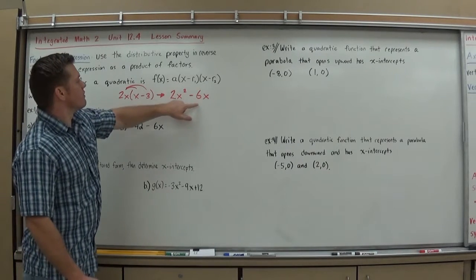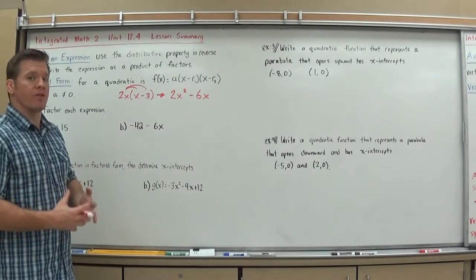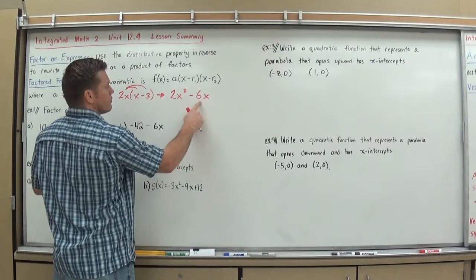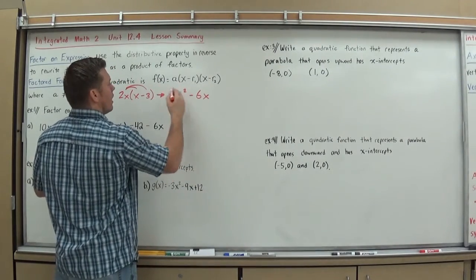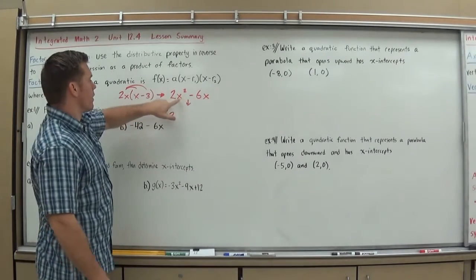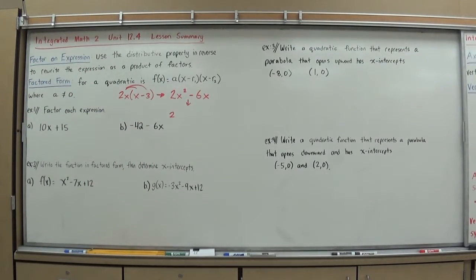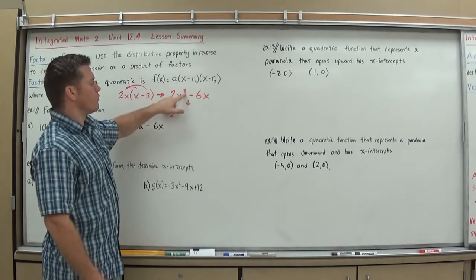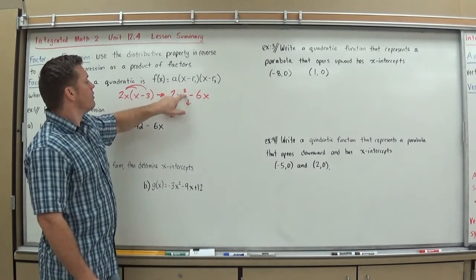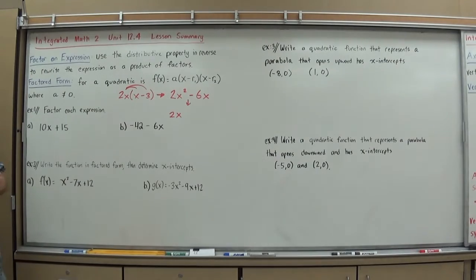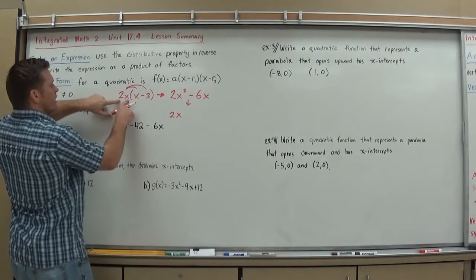Factoring is doing this in reverse. The key is to look at both terms and find everything they share — you look at the numbers, you look at the variables. What number do they both share? They both share a 2, so 2 is a factor that goes into both. Now look at the variables they share — they both have an x. What you want to take out is the highest power that they both have. You can never go higher than your lowest power. They both have x to the first, so x to the first is my highest power I can take out. So I can take out a 2x.